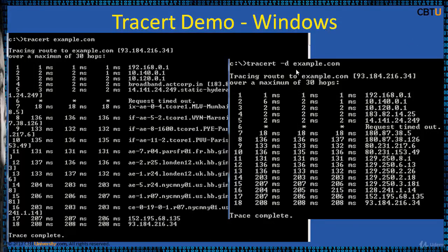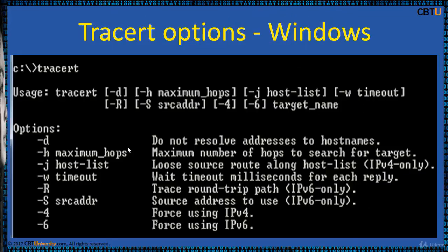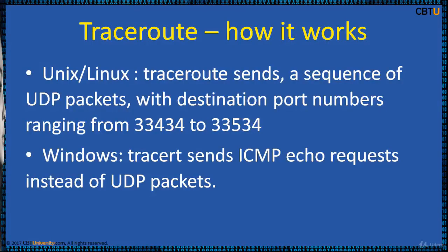TraceRoute with the minus-d switch option will not resolve to the domain names for each of the hops, making the trace faster. Just type tracert and enter to get the usage and the options that are available.